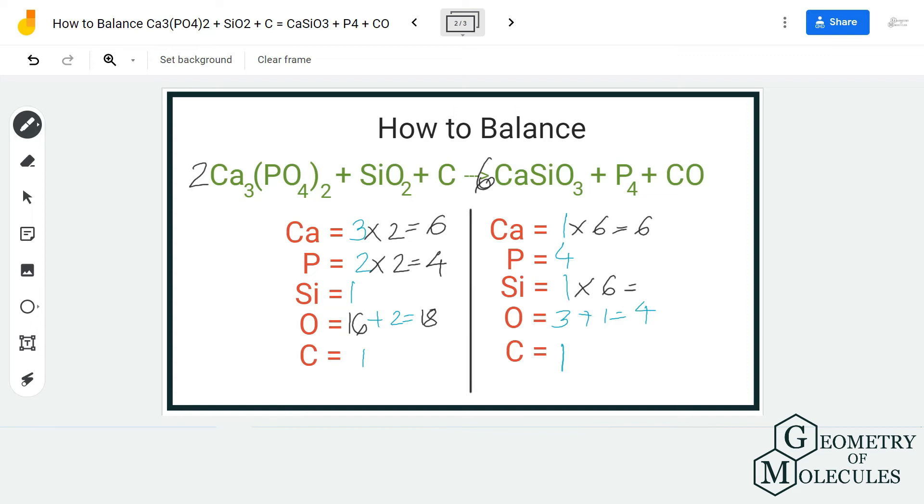You have to update that on that side as well by putting a coefficient over here. So now we have six silicon atoms, but it changes the number of oxygen atoms.